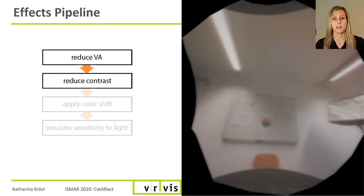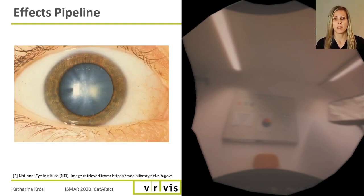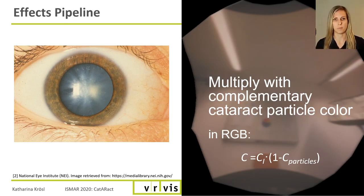Next, we apply a color shift. The tinted vision that people with cataracts sometimes experience is caused by particles in the lens that absorb or reflect parts of the incoming light. The lens often appears bluish-white. This part of the incoming light does not fall onto the retina. Therefore, the resulting color shift can be simulated by multiplying the image color with the complementary color of these cataract particles. Since this is a physical and not a perceptual process, we do our calculations in linear RGB and not in a perceptual color space.